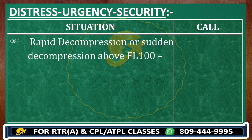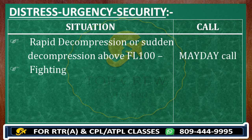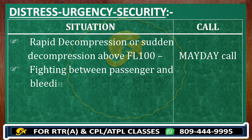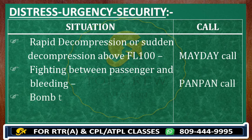Rapid or sudden decompression above flight level 100 would be Mayday. In case of fighting between passengers and if they are bleeding, it would be Pan Pan. And if bomb threat — guys, whether in air or on the ground — it would always be a Mayday call.